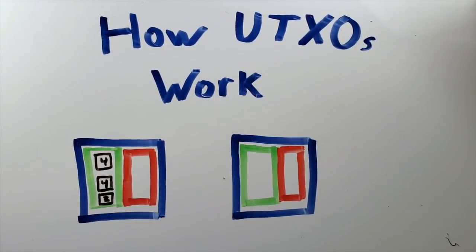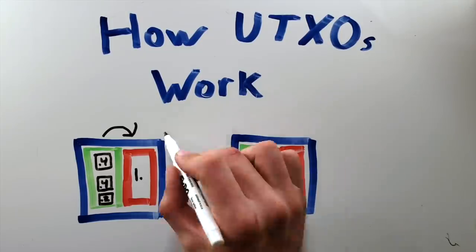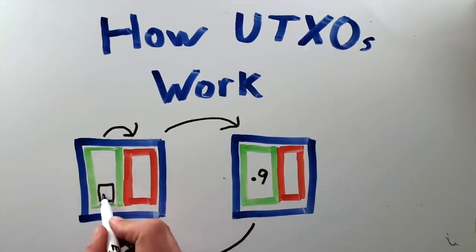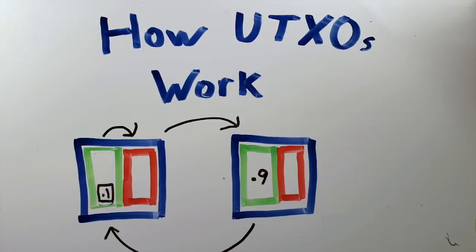Take this Bitcoin wallet for example. While I do have one Bitcoin, this Bitcoin is split into three inputs: 0.2, 0.4, and 0.4. If I want to send 0.9 Bitcoin to this other wallet, my wallet must combine the two 0.4 inputs and the 0.2 input into one output of one whole Bitcoin. It then sends it and drops a 0.9 input into their wallet, and 0.1 Bitcoin is returned as change into my wallet.